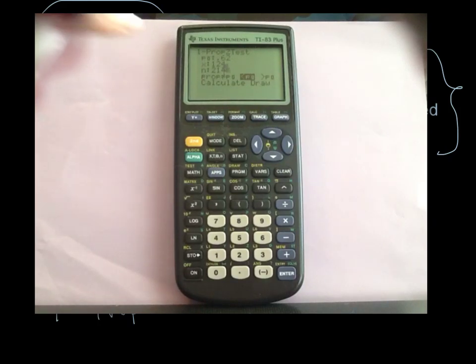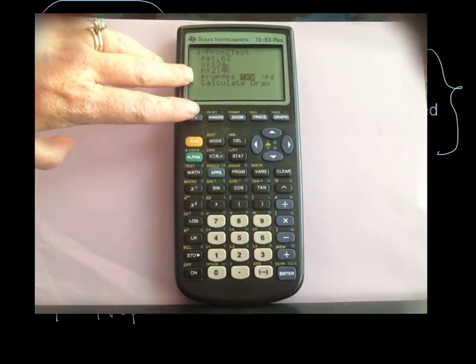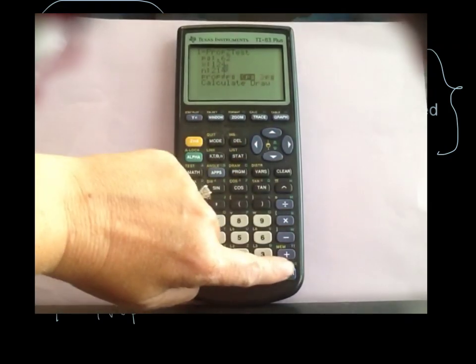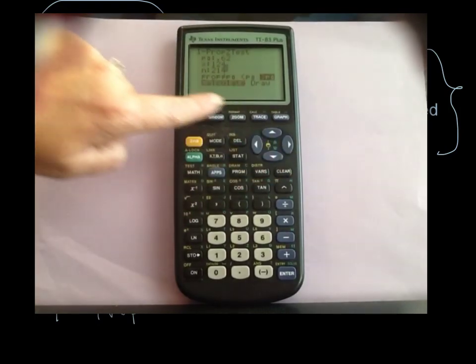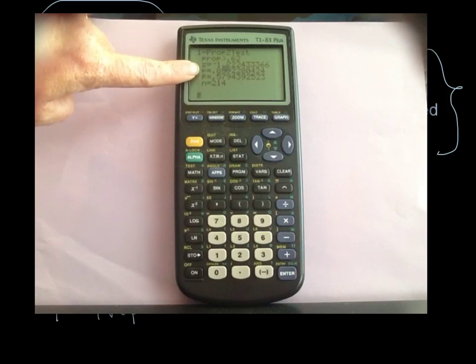In this case we were doing a right-tailed test because we had the phrase more than 62% as our alternative, our H_A. So we have to highlight the greater than symbol, p₀, and then hit calculate. Our p-value is 0.889.